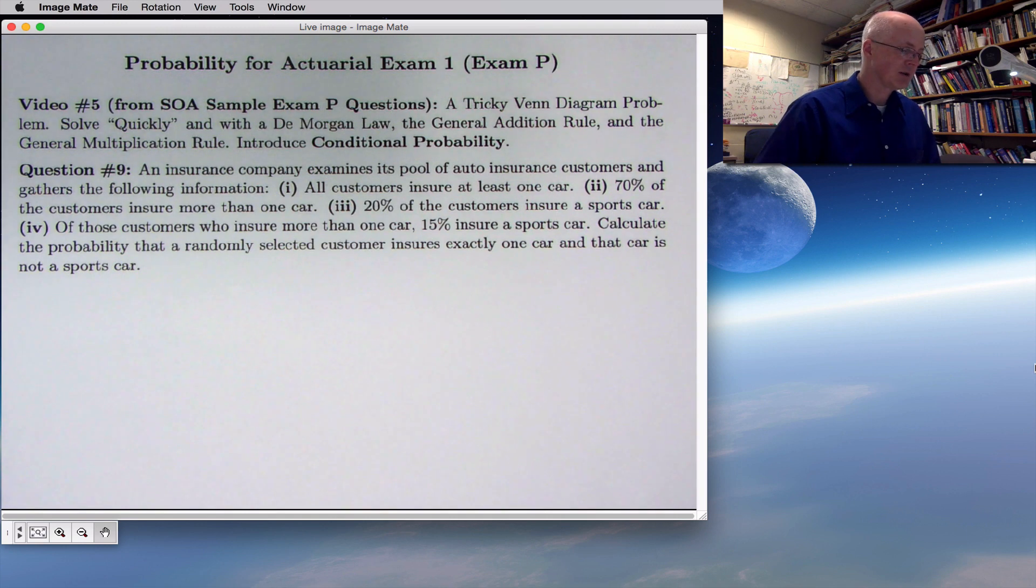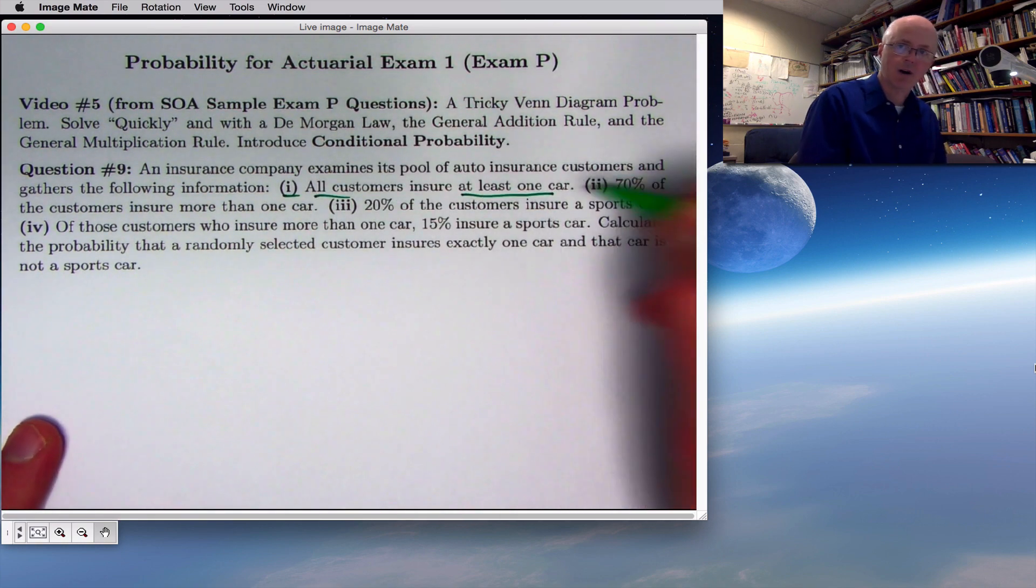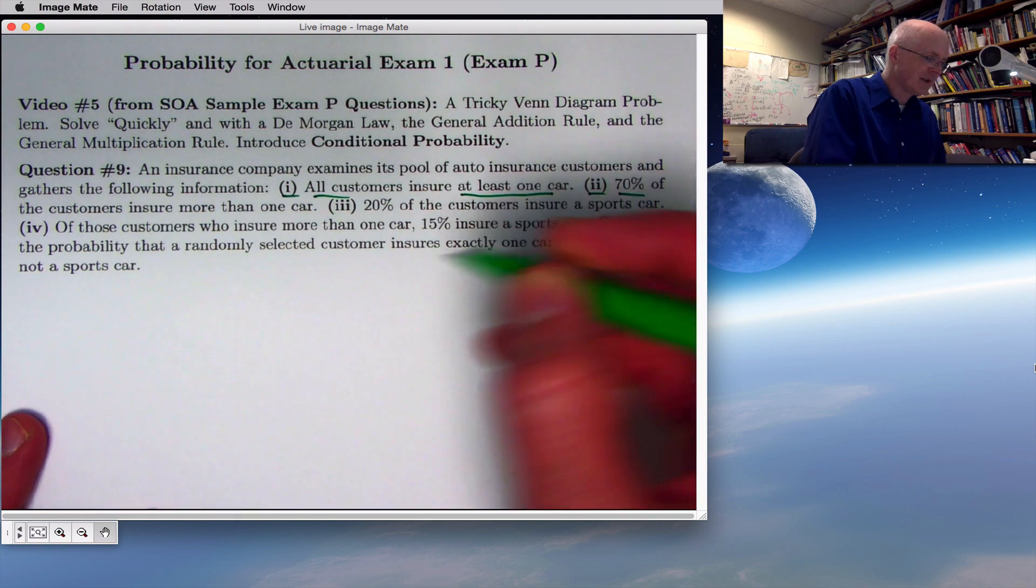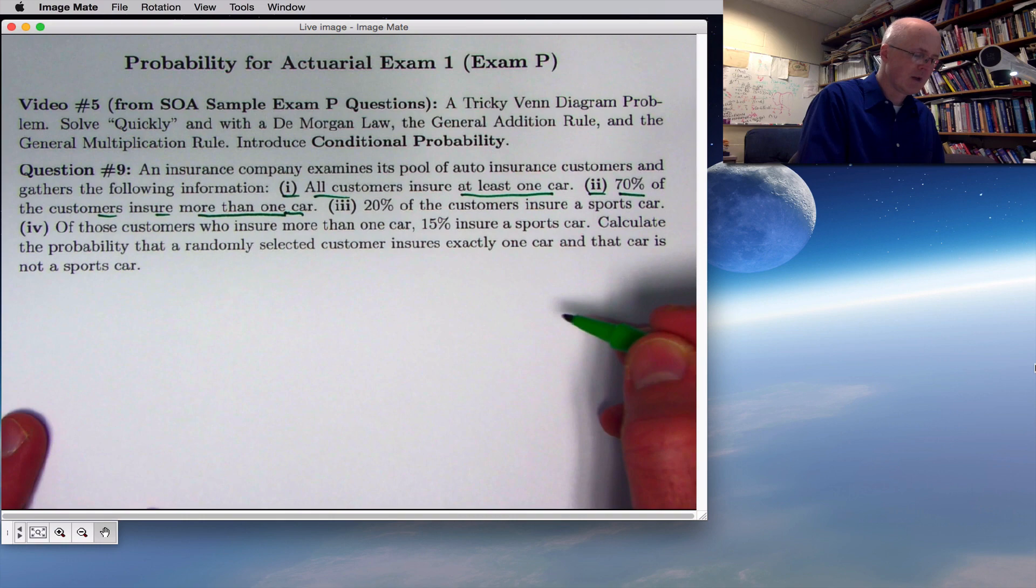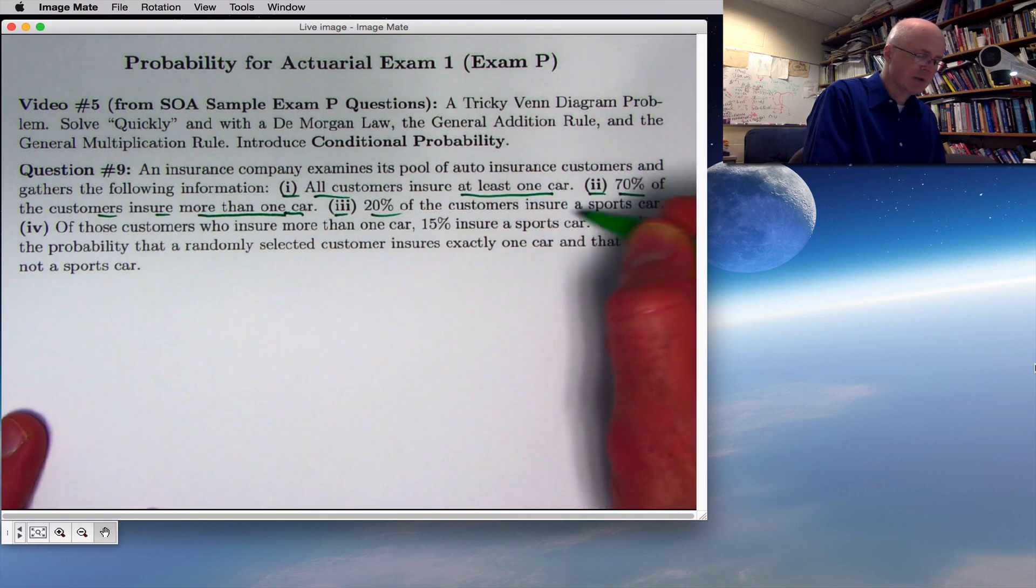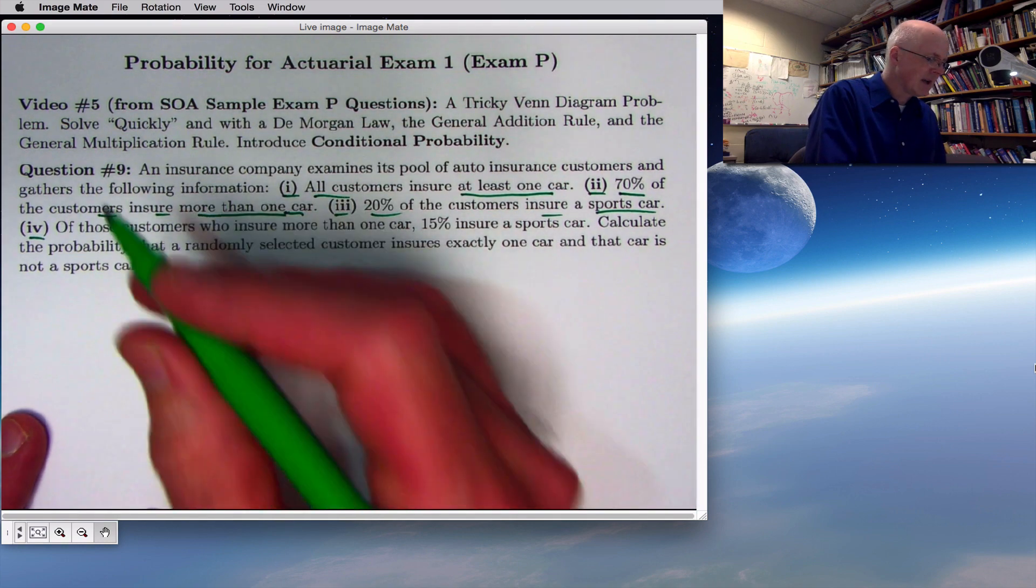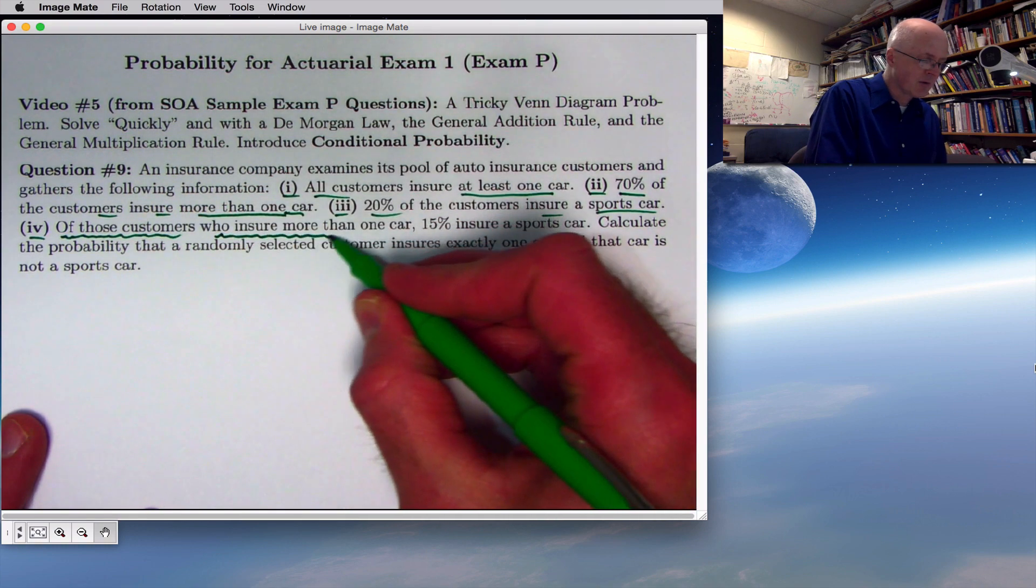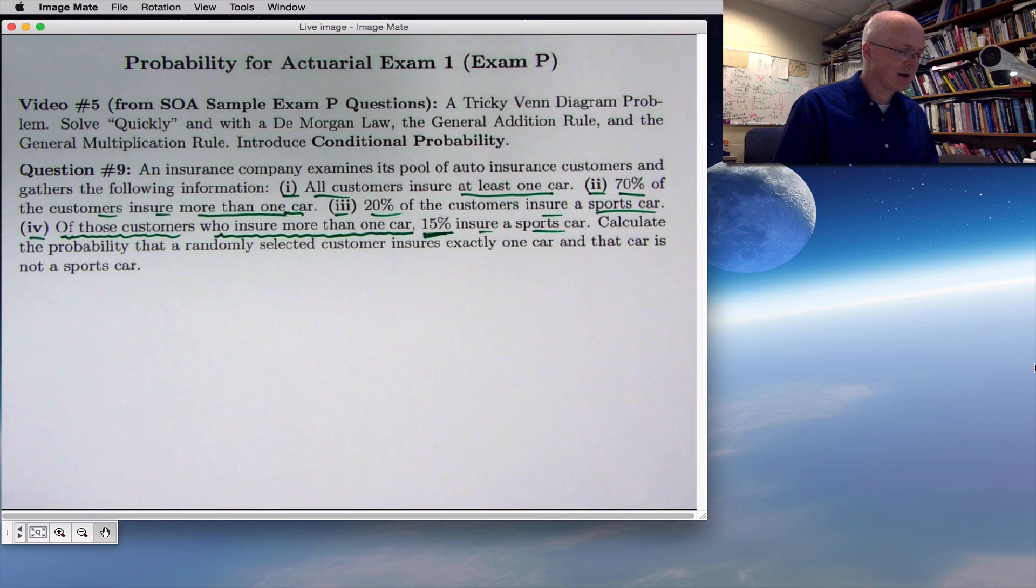So we have question 9 saying, an insurance company examines its pool of auto insurance customers and gathers the following information. First, all customers insure at least one car, nobody insures zero cars. Secondly, 70% of the customers insure more than one car. Third, 20% of the customers insure a sports car. And fourth, this is the trickiest one, listen carefully here, of those customers who are already known to insure more than one car, 15% of them insure a sports car. So we're mixing the two ideas here.